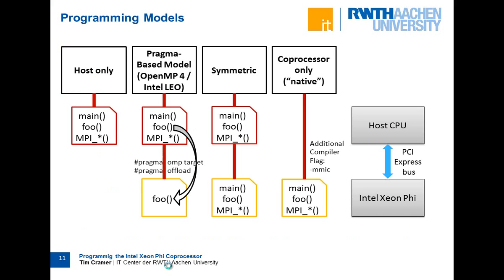How to program this device: we have different possibilities. First, host only - which makes no sense if you have a Xeon Phi. Next, coprocessor only: you add a compiler flag dash-m-mic and do a cross-compilation on the host system. With this flag you can do whatever you want - for example a function could have OpenMP or an MPI application started only on this device. Then there is symmetric execution: you start an MPI application on the host and on the Xeon Phi, or on multiple hosts and multiple Xeon Phis.